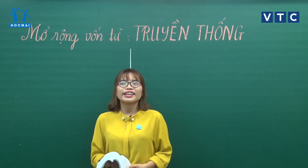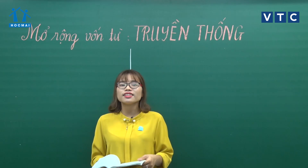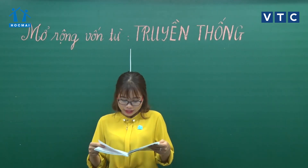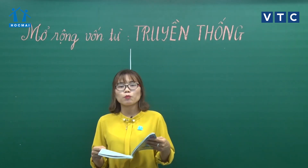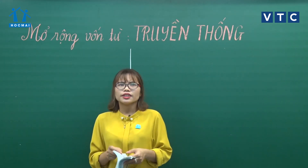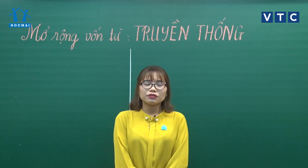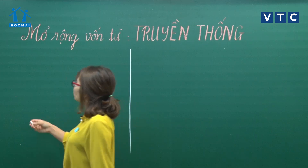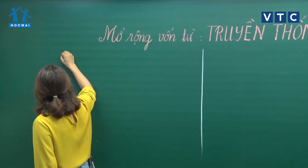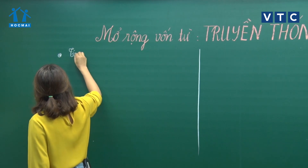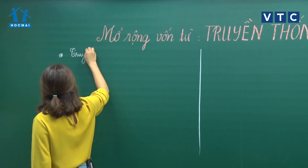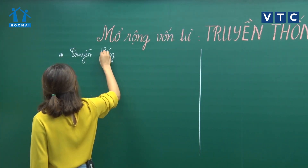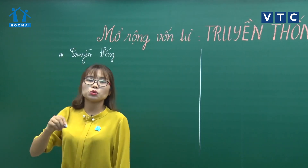Trong 3 đáp án, khi nói đến truyền thống là nghĩ đến những gì xa xưa từ thời ông bà tổ tiên để lại, đương nhiên đáp án A sẽ khiến các bạn băn khoăn - nó chỉ nói phong tục và tập quán của ông bà tổ tiên. Tìm hiểu về truyền thống, mình hãy thử cắt nghĩa 2 từ: truyền và thống.